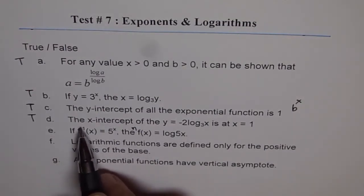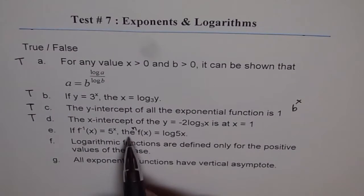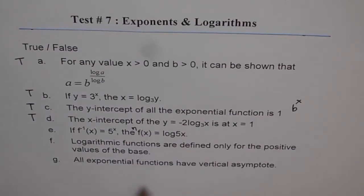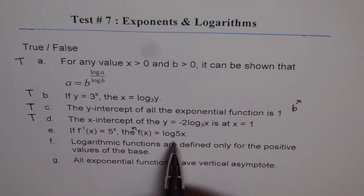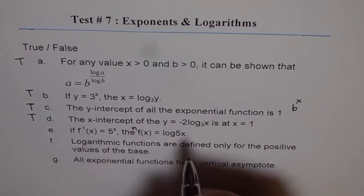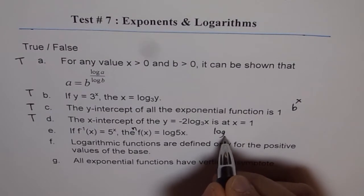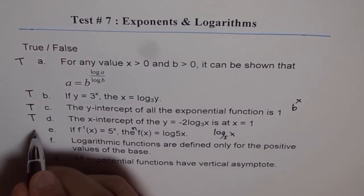If f inverse of x is 5 to the power of x, then f of x is log 5x. Well, this is kind of not true, right? What is missing here? Base should be 5. Do you see? The base is 5. So actually speaking, it should be log, not base 10. Log 5x. Do you understand? This should be in the base, right? So this is false.